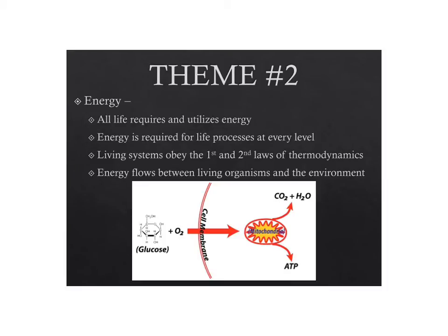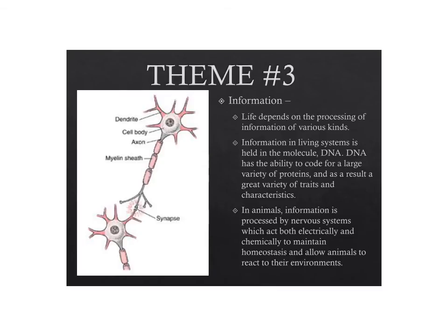The third theme is information. Life depends upon the processing of information of various kinds. At the most basic level, life uses the molecule DNA to code for information — specifically, DNA codes for proteins, and proteins are the molecules that determine your traits and characteristics. We can also look at information processing in nervous systems; nerve cells carry information electrically and chemically, and your nervous system helps your body maintain homeostasis and control all bodily activities.